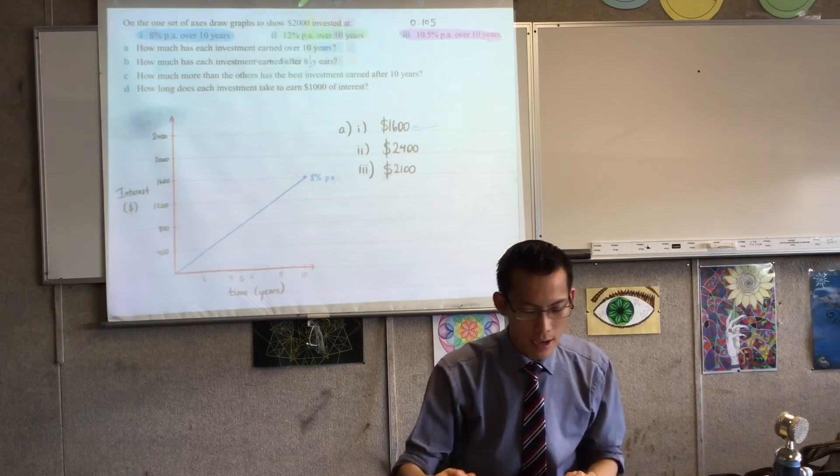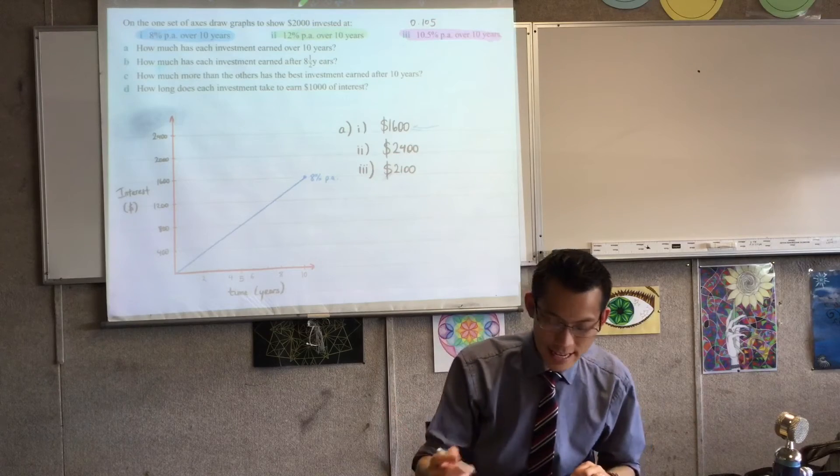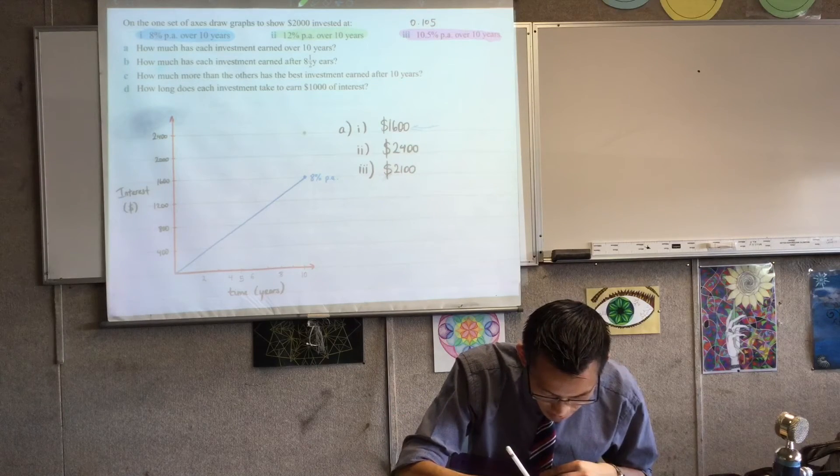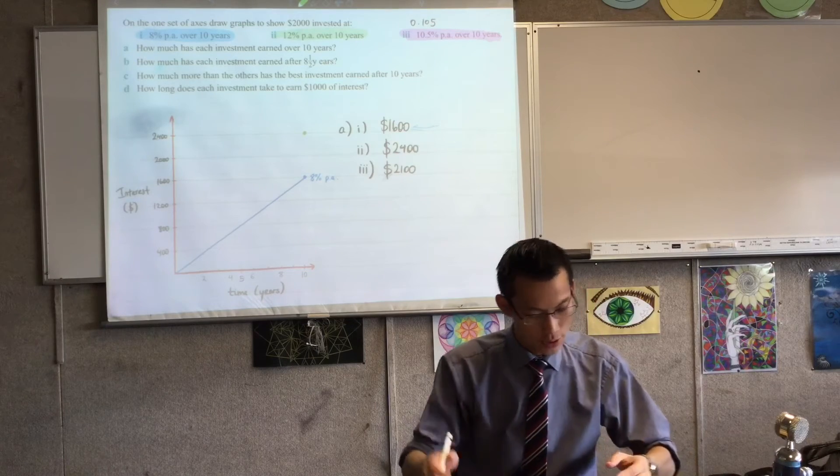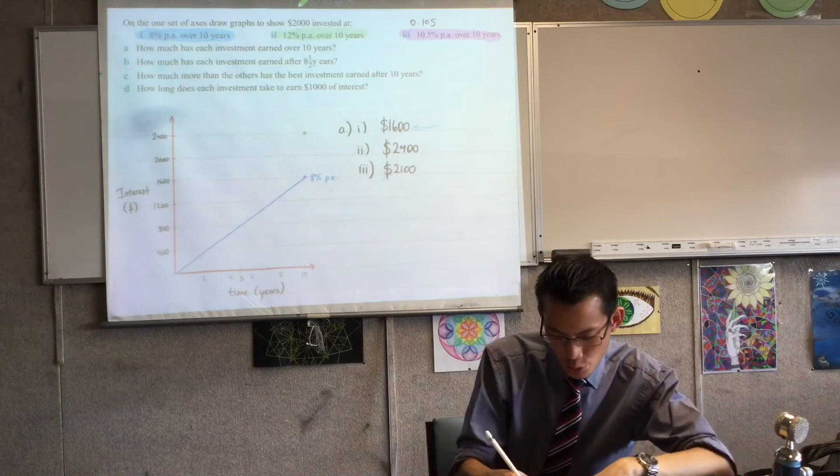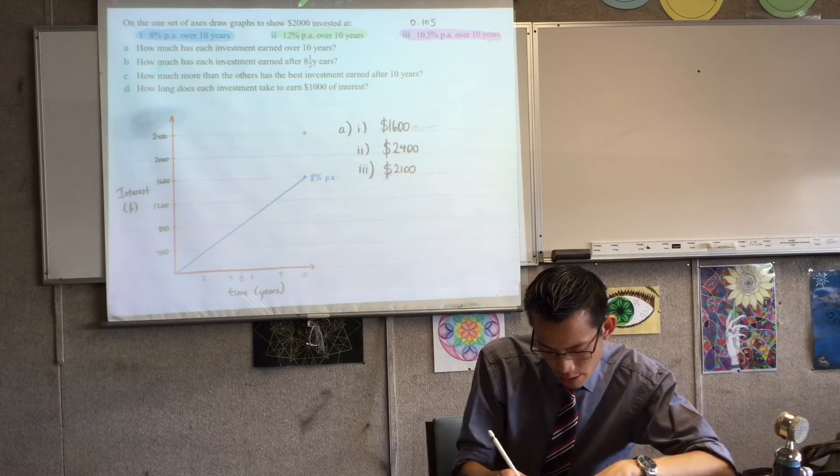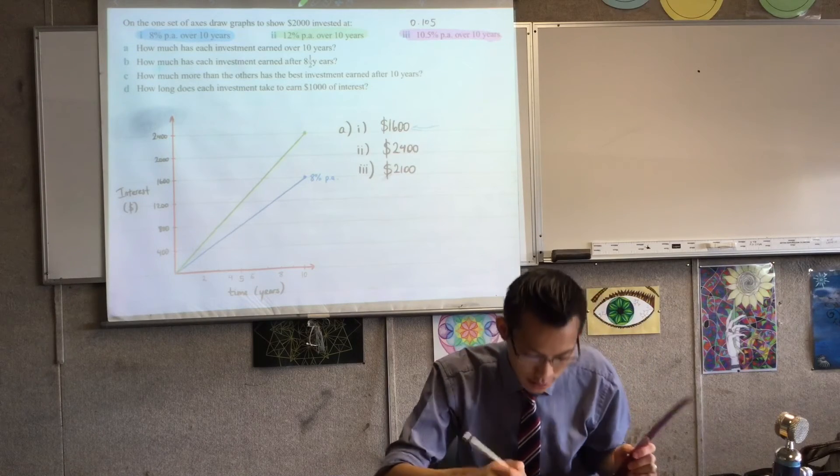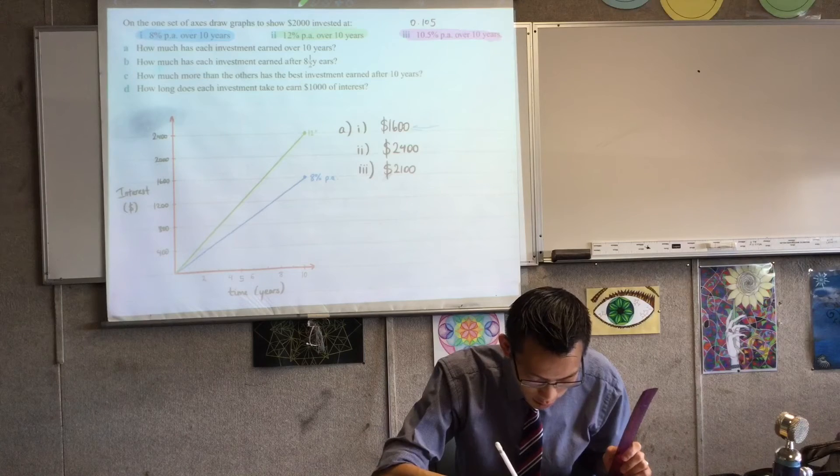Then I have a look at my middle one, my green one, 12%. It ends up at $2,400, so it was the highest value. So I'm going to put a point in there. And just like before, if you've been in for zero years, you don't have any interest. So I'm going to go all the way to the origin and draw my straight line in there. Just like I did before, I will label it.